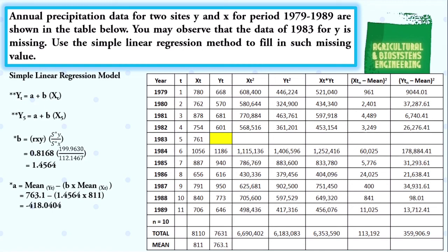Now that we have solved for A and B, we can solve for the missing data value of Y using the formula Y5 = A + B·X5. We substitute the values: negative 418.0404 plus 1.4565 times 761. We simply solve and obtain 690.28 as our final answer.